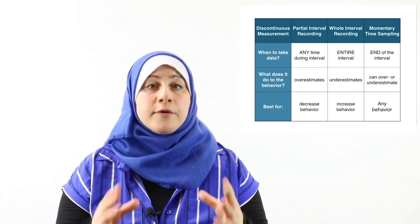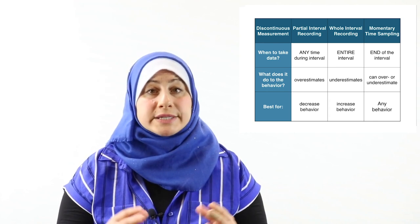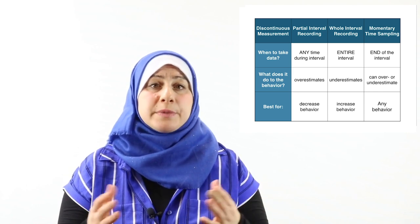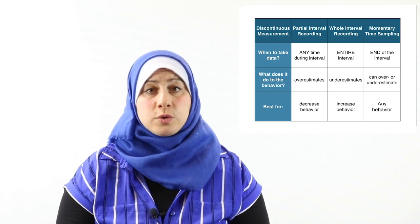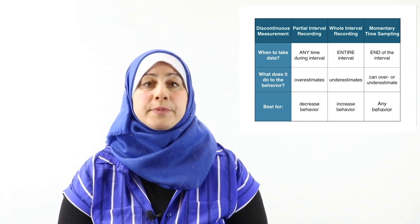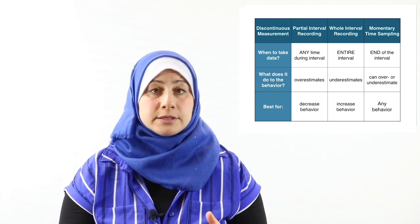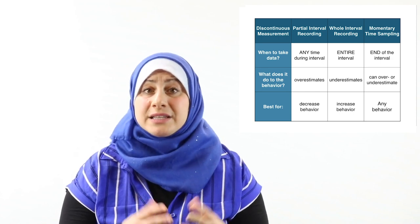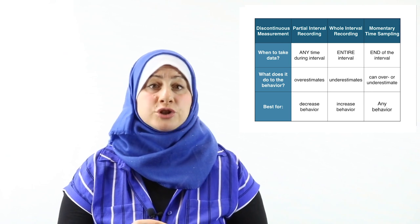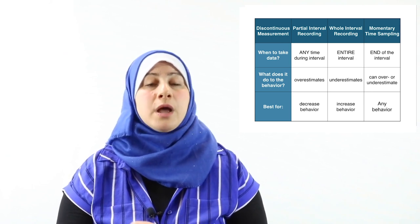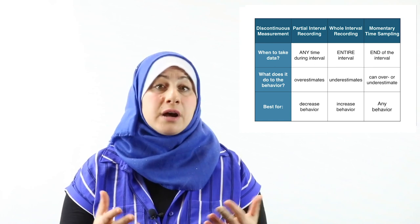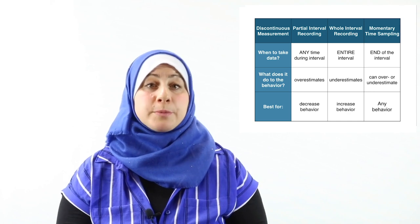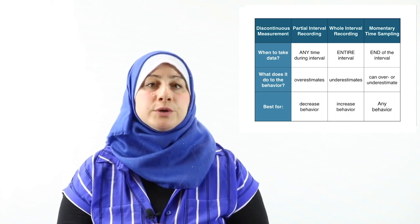Summary of the three methods: Partial interval is recorded at any time during the interval — once the behavior occurs you don't need to look for it anymore; it will overestimate the behavior and is best for behaviors you want to decrease. Whole interval requires the behavior to occur the entire time; it will underestimate and is best for behaviors you want to increase. Momentary time sampling observes the behavior only at the end when the timer beeps; it may over- or underestimate and can be used for any behavior.